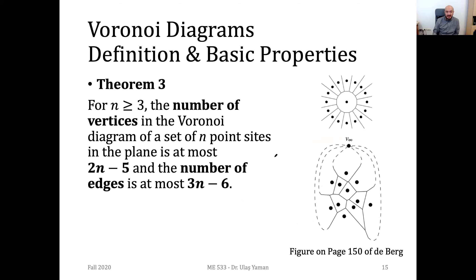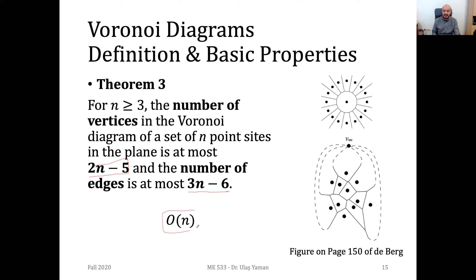We have another theorem: if we have more than three sites, then the number of vertices in the Voronoi diagram is at most 2n minus 5, and the number of edges is at most 3n minus 6. The derivation is in the computational geometry textbook. The key takeaway is that there is a linear relationship between the number of sites and the number of vertices and edges.